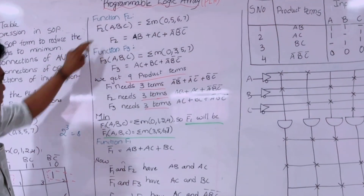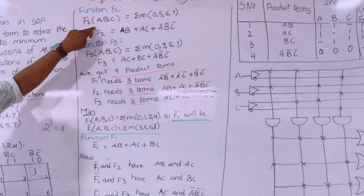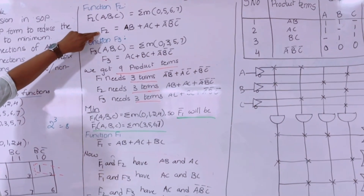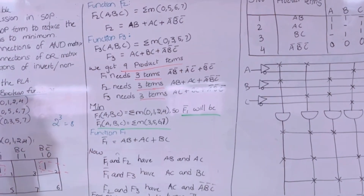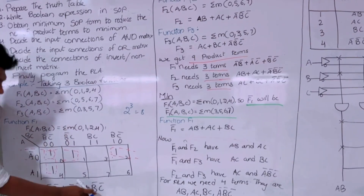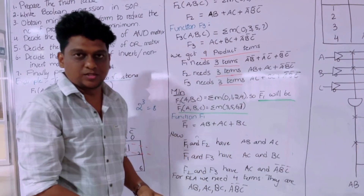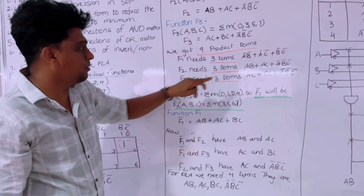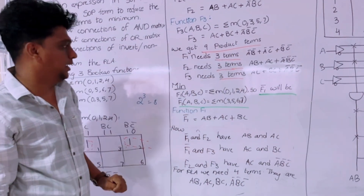Similarly, for F2 and F3 we implement the same KMAP and get the corresponding outputs. After using KMAP we get the output for F2, and after implementation we get F3. Now we count how many product terms we have for these three boolean functions — totally we have nine product terms. F1 needs three terms, F2 needs three terms, and F3 needs three terms. This is the result after simplification using KMAP.